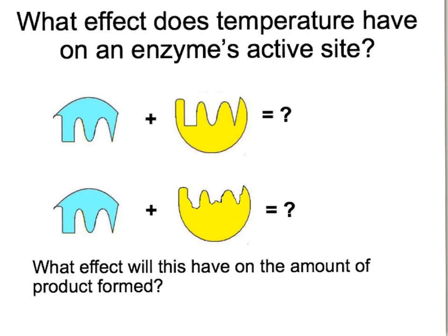With a normal enzyme, the substrate and the enzyme fit together perfectly and the substrate molecule is broken into its products. But if the active site has changed due to damage, there's no way the substrate will fit, the products will not be formed, and the substrate molecule will remain unchanged.